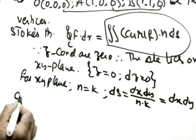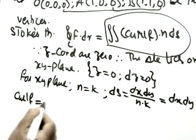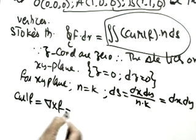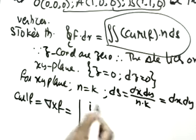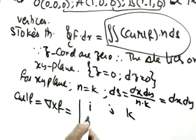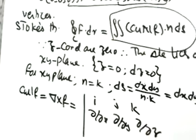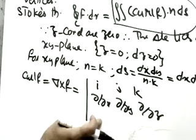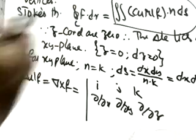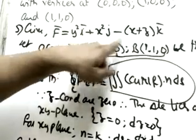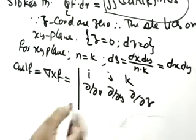Let me find curl F. Curl F is del cross F. Writing the determinant with i, j, k in the first row; ∂/∂x, ∂/∂y, ∂/∂z in the second row; and the components of F — y², x², and (−x + z) — wait, the coefficients are y², x², minus x plus z — in the third row.